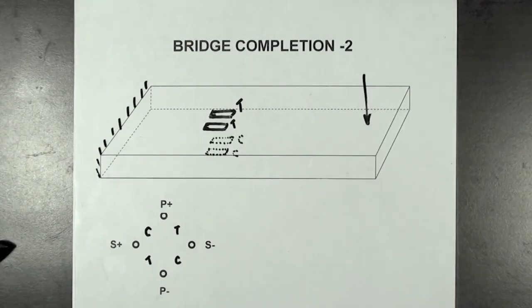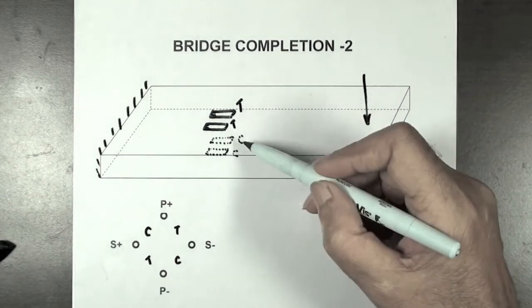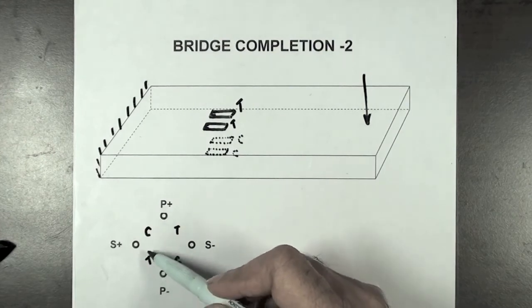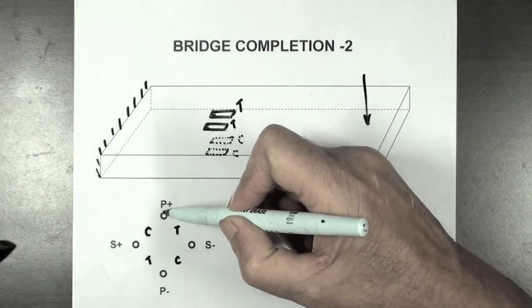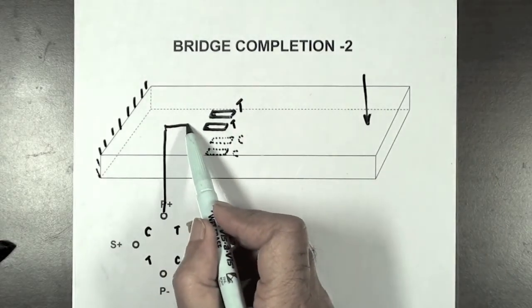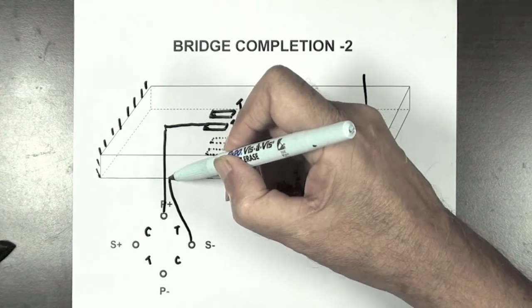With four strain gauges on the same beam—two on the top surface and two on the bottom surface—when the beam is subjected to bending, the two top gauges will be in tension and the two bottom gauges will be in compression. These gauges have to be connected together so that a tension gauge is adjacent to a compression gauge in order to get the maximum output from the completed Wheatstone bridge.